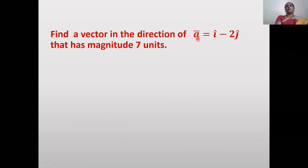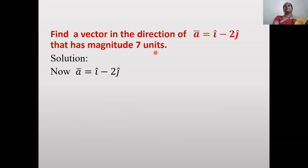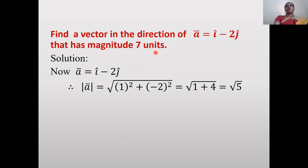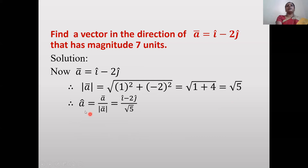Next problem: Find a vector in the direction of ā = i - 2j that has magnitude 7 units. We first find the unit vector in the direction of ā, then multiply by 7. Magnitude of ā: |ā| = √(1² + (-2)²) = √5.